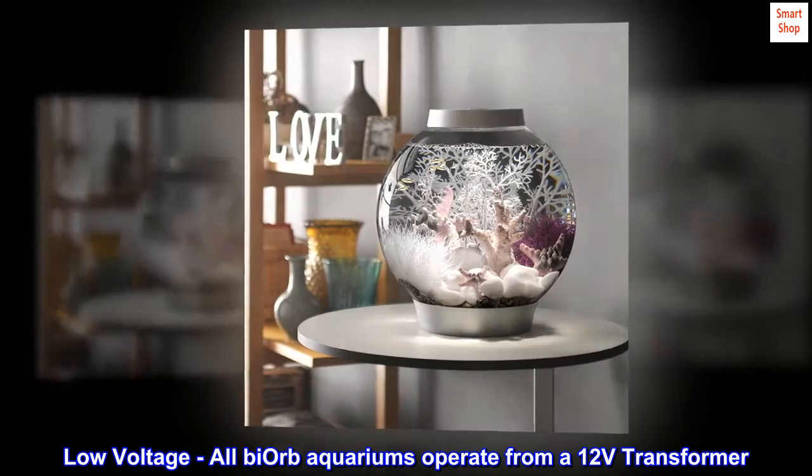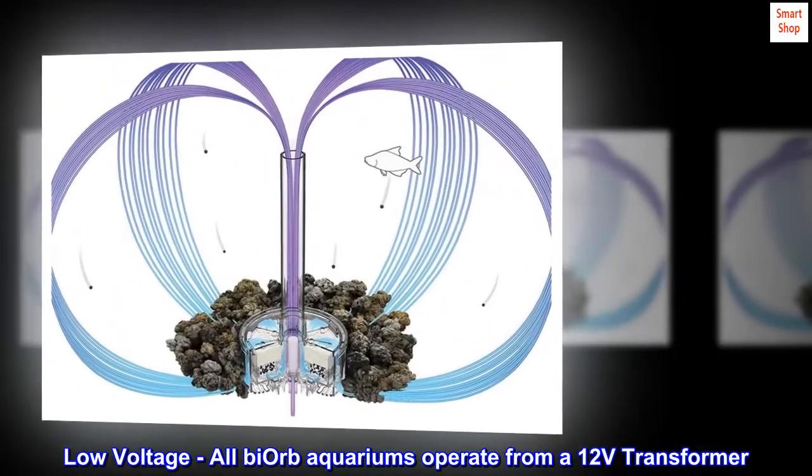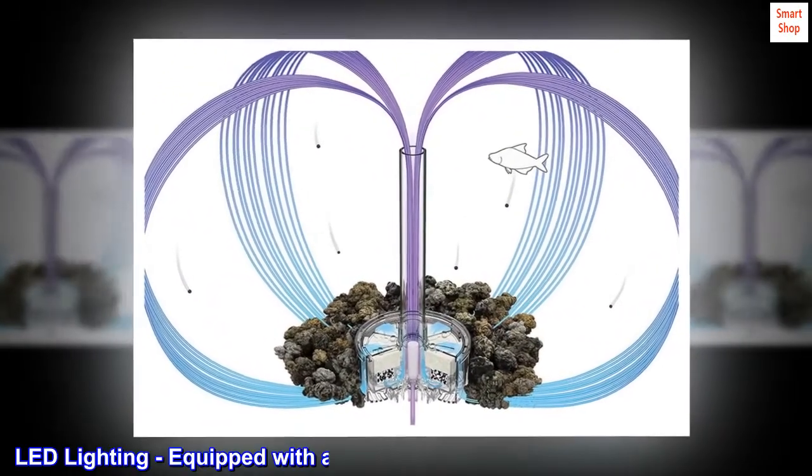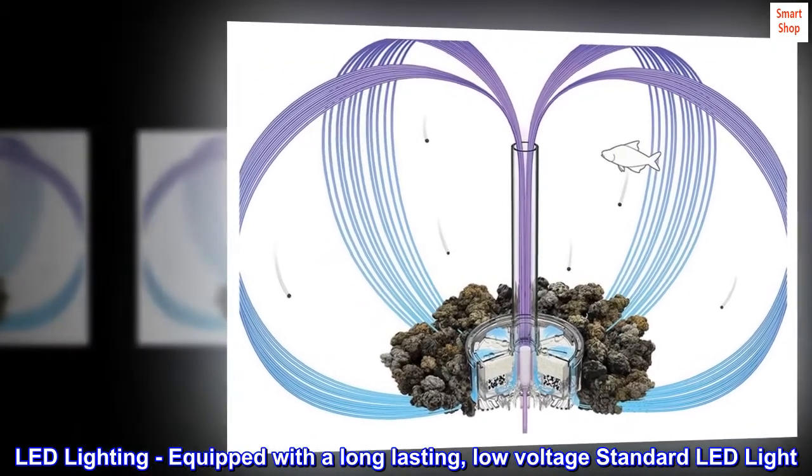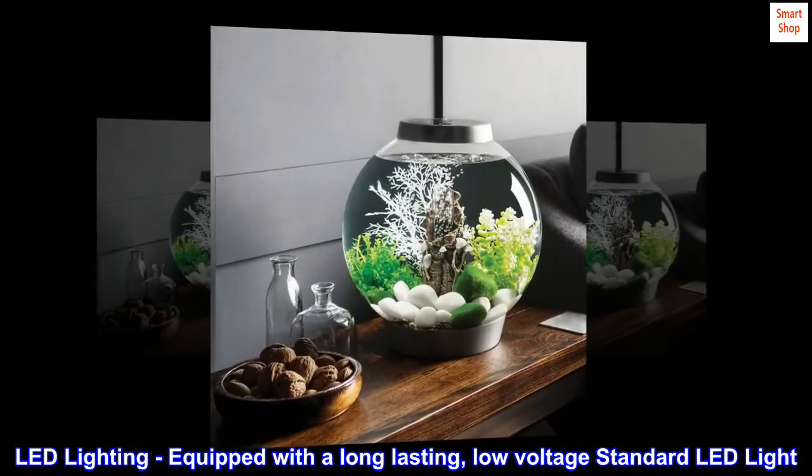Low-voltage, all bi-orb aquariums operate from a 12 volts transformer. LED lighting equipped with a long-lasting, low-voltage standard LED light.